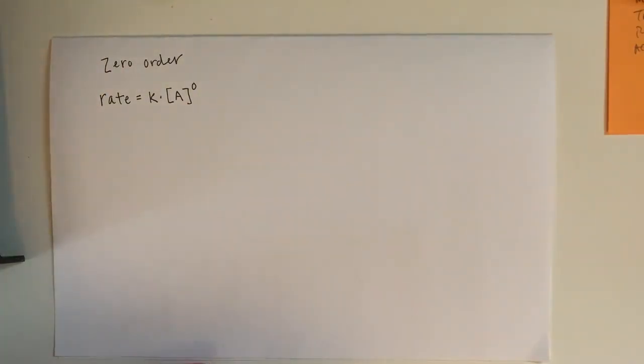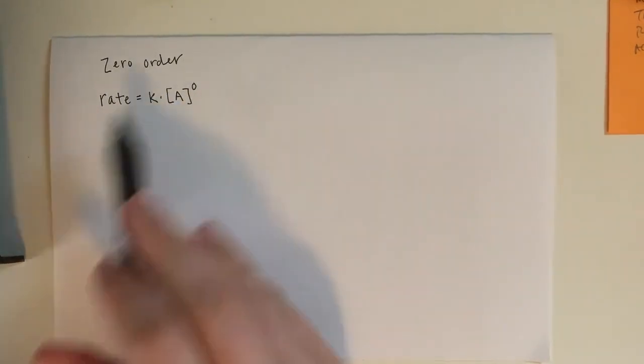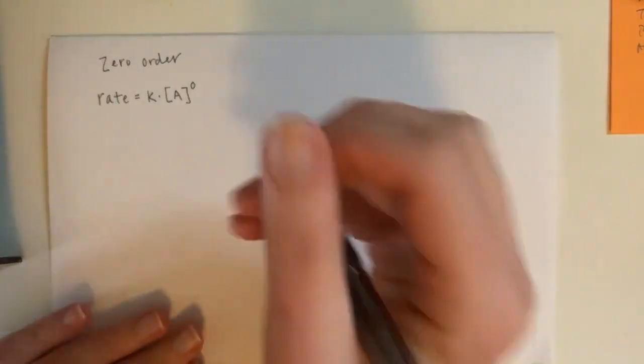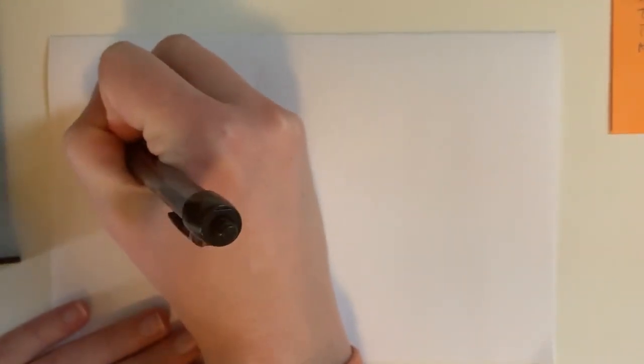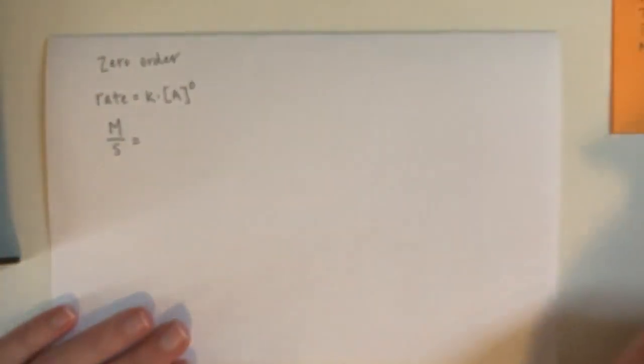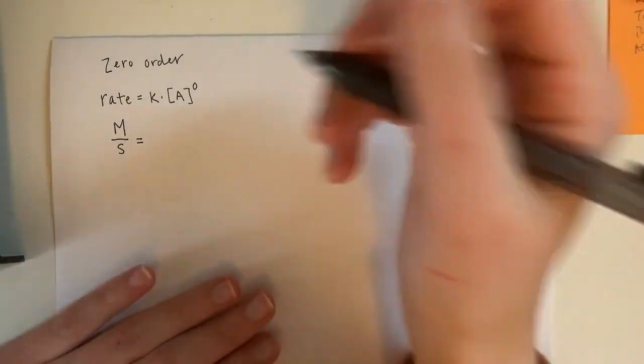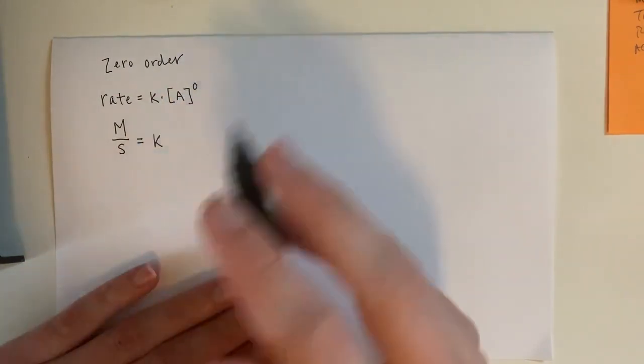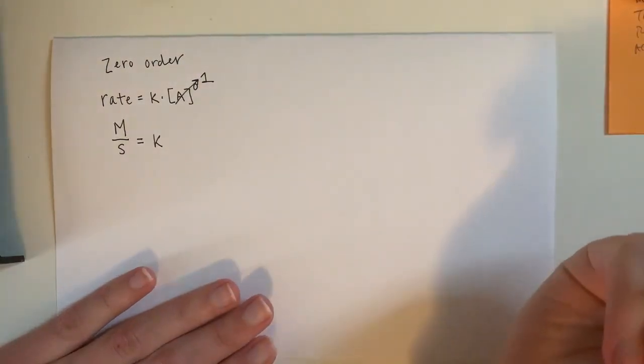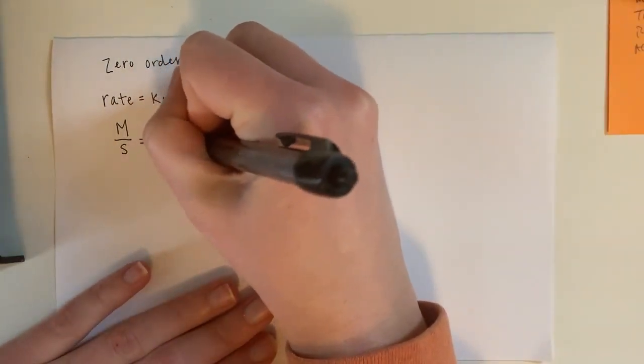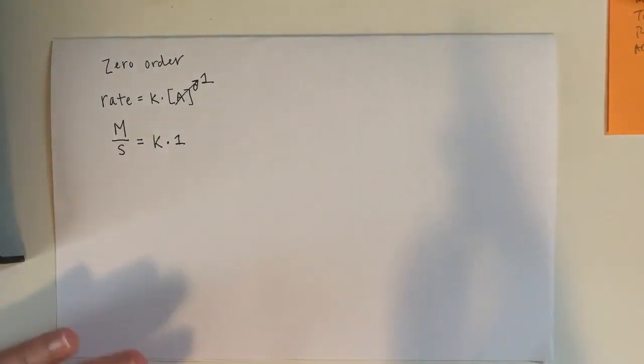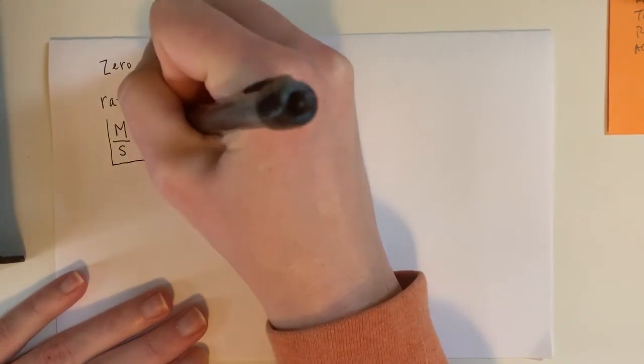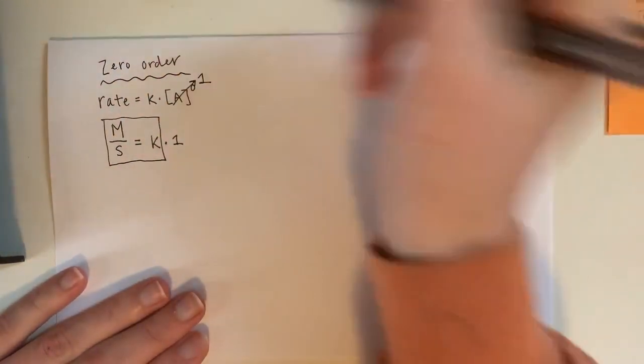Now let's take a look at the units for each of the orders of reactions. So the first one we have is zero order. And so if we want to figure out what the units on K are, I need to plug in my units for each substance here. So rate is most likely measured in molarity per second equals K. And when this one here, if I have any number raised to the zero or any unit raised to the zero, this is just a 1. So there's actually just K multiplied by a 1 here. And so there are no other units to cancel out. And the units on K are going to be molarity per second if this is a zero order reaction.